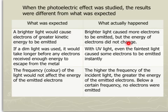Second point. If a dim light was used, it would take longer before any electrons receive enough energy to escape from the metal, from the cathode metal. But what actually happened was, with UV light, even the faintest light caused some electrons to be emitted instantly, with no time delay.